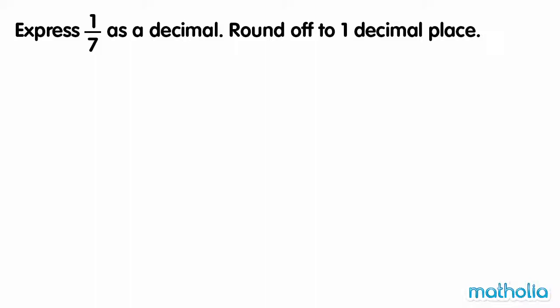To round off to one decimal place, we need to look at the digit in the hundredths place. So let's express one as one point zero zero.